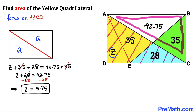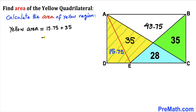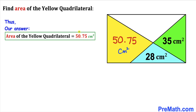So Z = 15.75 cm². Now for the final step: the area of the yellow quadrilateral is the sum of its two individual parts, 15.75 and 35, which gives 15.75 + 35 = 50.75. Therefore, the area of the yellow quadrilateral is 50.75 cm².